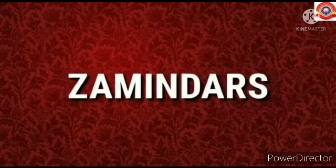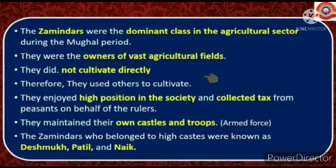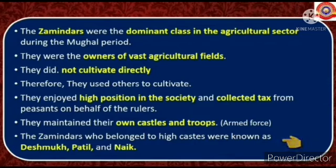Next, zamindars. The zamindars were the dominant class in the agricultural sector during the Mughal period. They were the owners of vast agricultural fields but did not cultivate directly — they used others to cultivate. They enjoyed a high position in society and collected tax from peasants on behalf of the rulers. They maintained their own castles and troops. Zamindars who belonged to high castes were known as Deshmukh, Patil, and Naik.